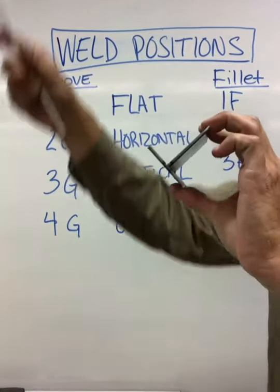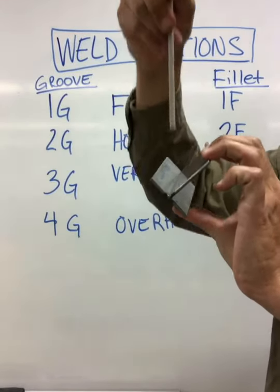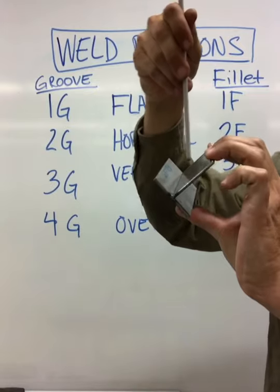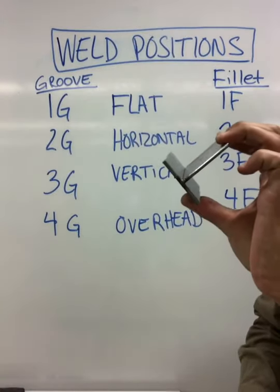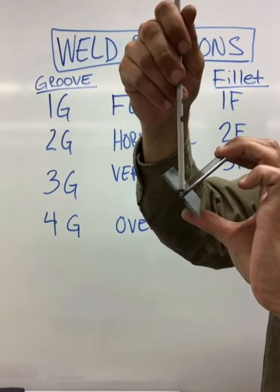tilted in a way that the rod can come at a 90-degree angle, so straight up and down, and that would allow gravity to kind of work on our side. So this is a 1F fillet weld, or a 1FT.